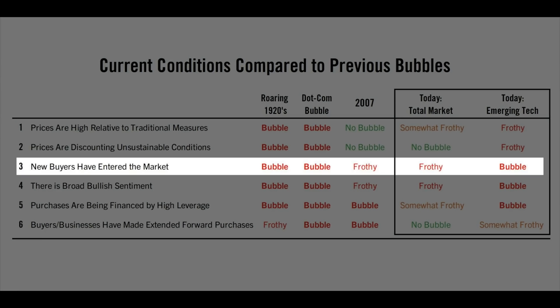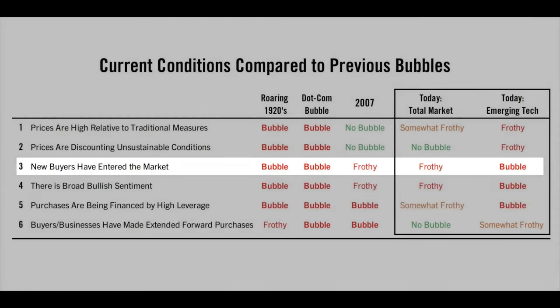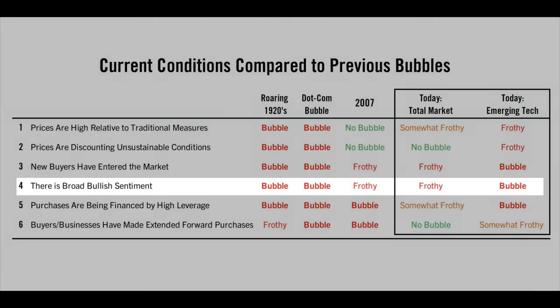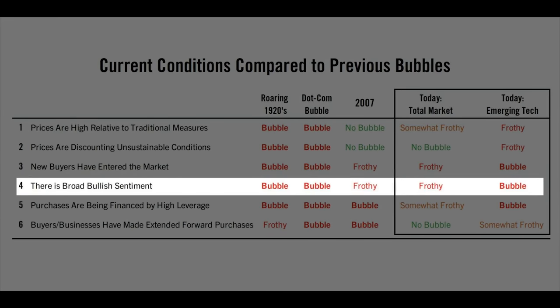The third point is the speculative element. One measure of this is new buyers in the market — the sort of thing where you go to a cocktail party and people who were never involved in investing are suddenly investing. It could be tech stocks, real estate, or whatever. They're drawn in, there's big bullish sentiment, and not having these things makes you feel dumb.